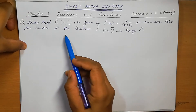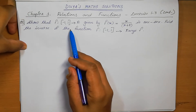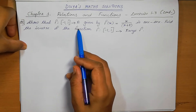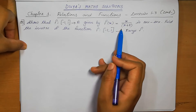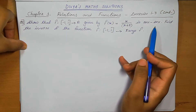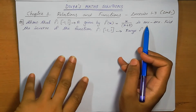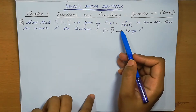Show that the function f: (-1,1) → ℝ given by f(x) = x/(x+2) is one-to-one. We need to show that the function is 1-to-1.